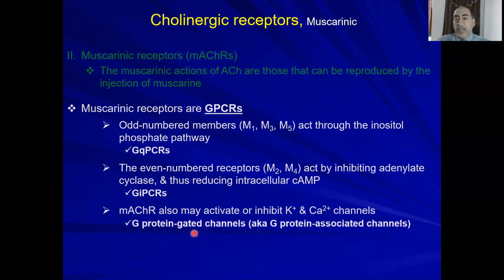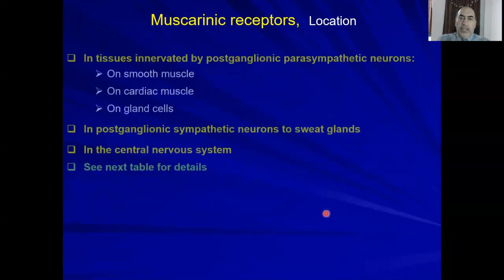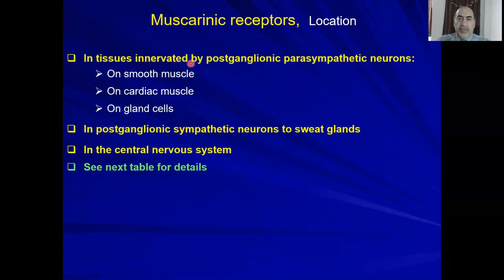There is also a third category: G-protein-associated or gated channels, where muscarinic cholinergic receptors may activate or inhibit potassium and calcium channels. These receptors are located in tissues innervated by post-ganglionic parasympathetic neurons — on smooth muscle, cardiac muscle, and gland cells.